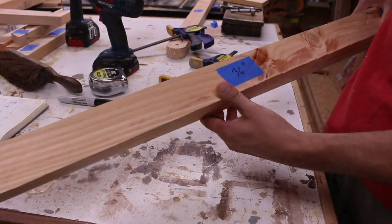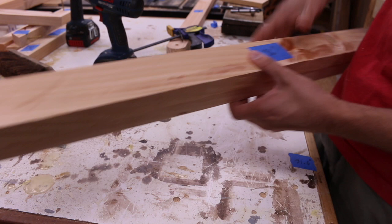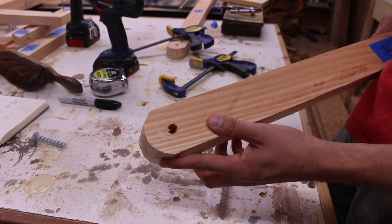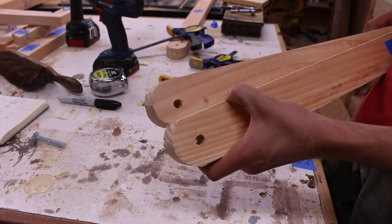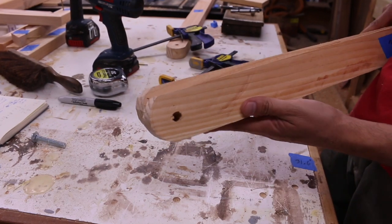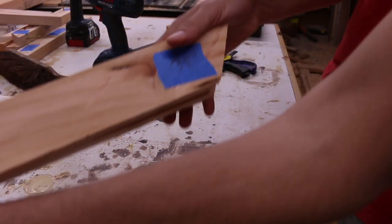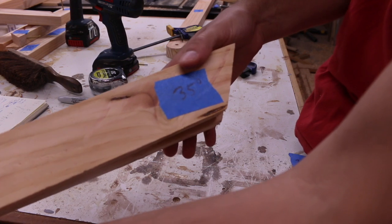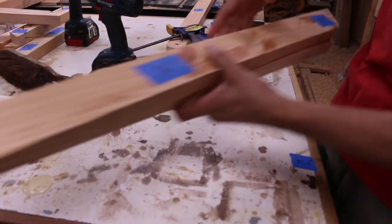Here are the 36 inch legs. On one side we have our 3/8 of an inch hole and I clamped them together to make the hole exact in the same spot. On the other side we have our 35 degree angled leg that we will attach.